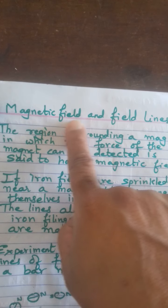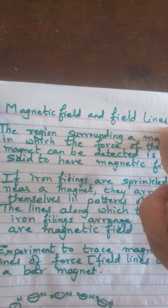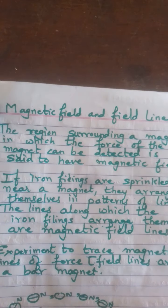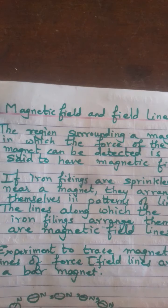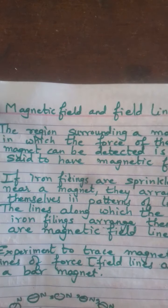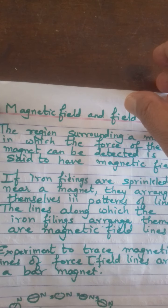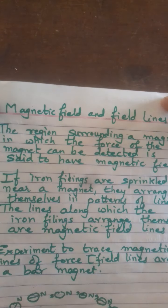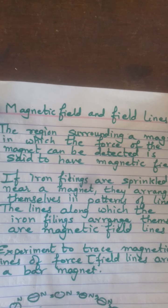Now we will see magnetic field and field lines. If you sprinkle iron filings around a bar magnet, you know they are attracted — the force of the magnet is felt in that region. So magnetic field is the region surrounding the magnet in which the force of the magnet can be detected, and that region is said to have a magnetic field.